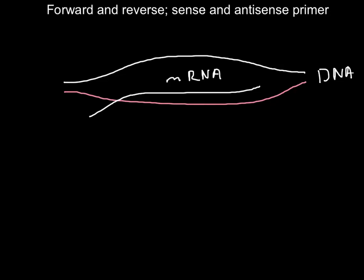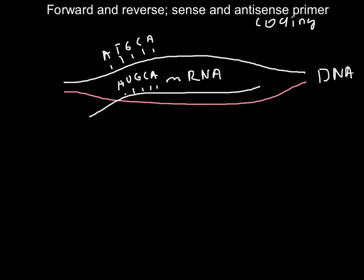For example, if we have A, T, G, C, A on the top strand of the DNA, we would have A, U, G, C, A on the messenger RNA — so the sequence is the same, except here we have uracil and here we have thymine. Thymine on the DNA strand is substituted with uracil on the messenger RNA strand. So we call the top strand the coding strand, and the bottom strand the non-coding strand.